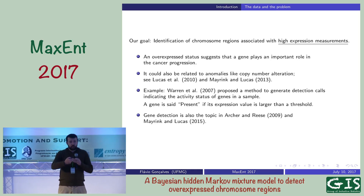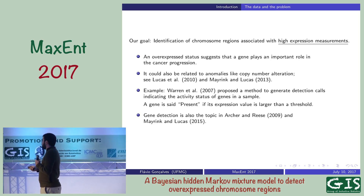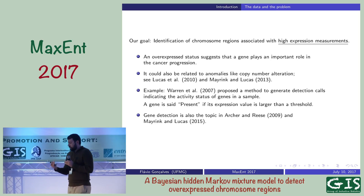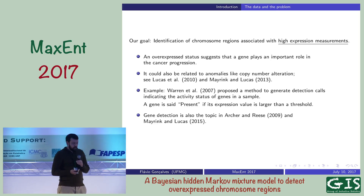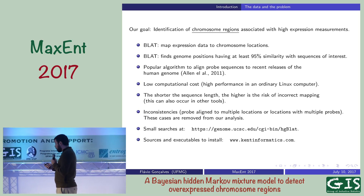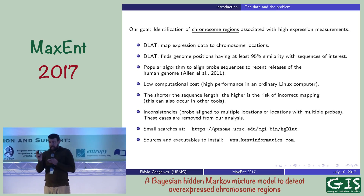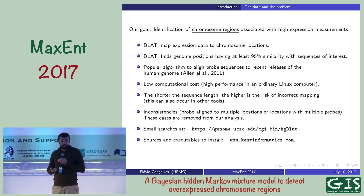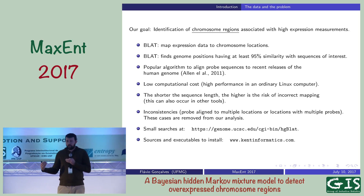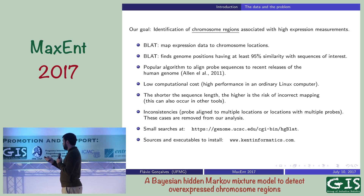Identifying genes with high expression and understanding factors related to them has been studied before in the literature. But we not only want to identify these genes, we want to know where they are in the human genome — in which chromosome and in which part of which chromosome. So I need to map the sequences from my microarray into the human genome. A popular tool that does that is called BLAT, which maps arbitrary sequences of nucleotides to the human genome.